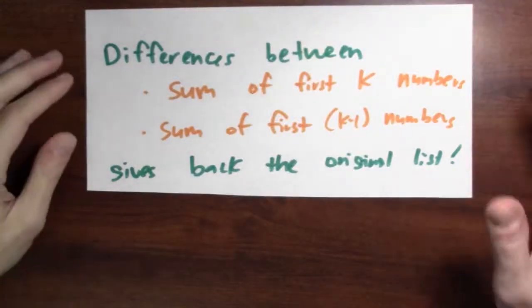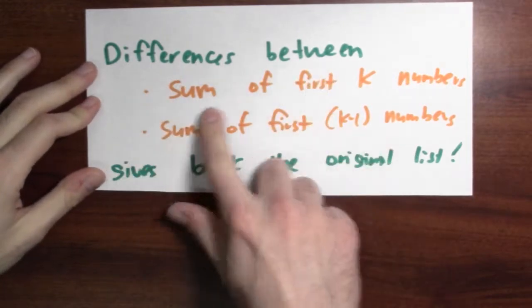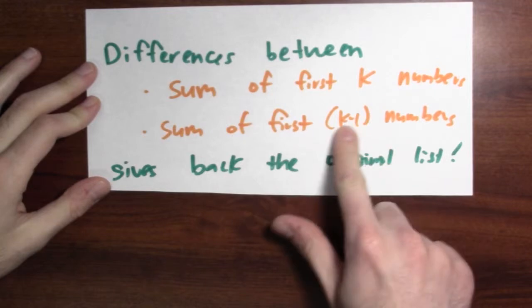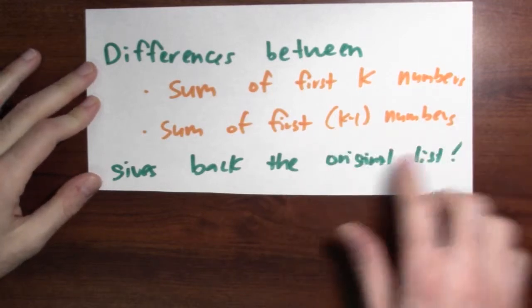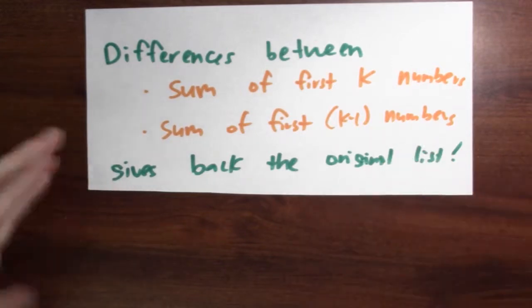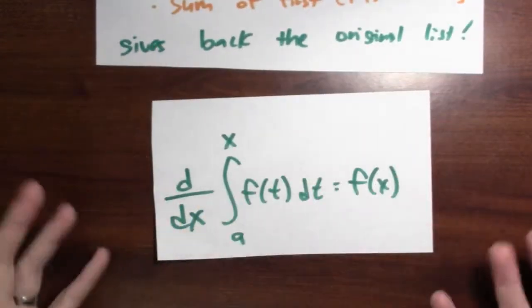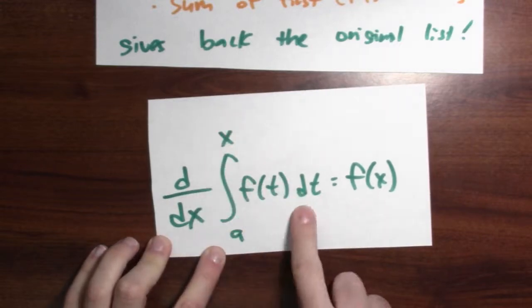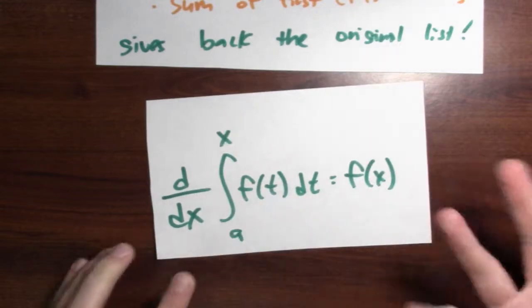If I were to look at the list of differences of the accumulation function, I'd get back the original list. Taking differences between the sum of the first k numbers and the sum of the first k minus 1 numbers just gives me back my original list. This is analogous to the statement from calculus that if I take the derivative of the accumulation function, I get back the original function.